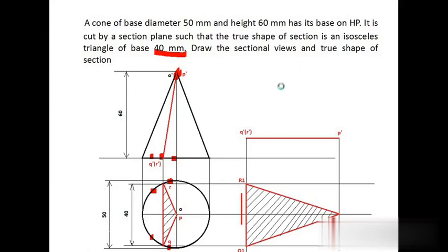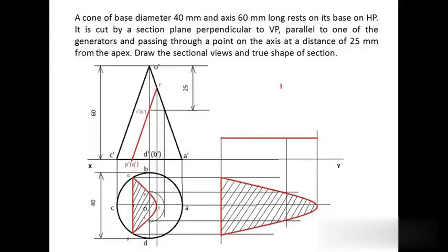We move on to the next problem — a cone cut by a section plane such that the true shape is a parabola. This is a direct question where you are given the position of the section plane. A cone of base diameter 40 mm and height 60 mm is resting on HP on its base. It is cut by a section plane perpendicular to VP, parallel to one of the generators, and passing through a point on the axis at a distance of 25 mm from the apex. Draw the sectional front view, sectional top view, and true shape of the section.